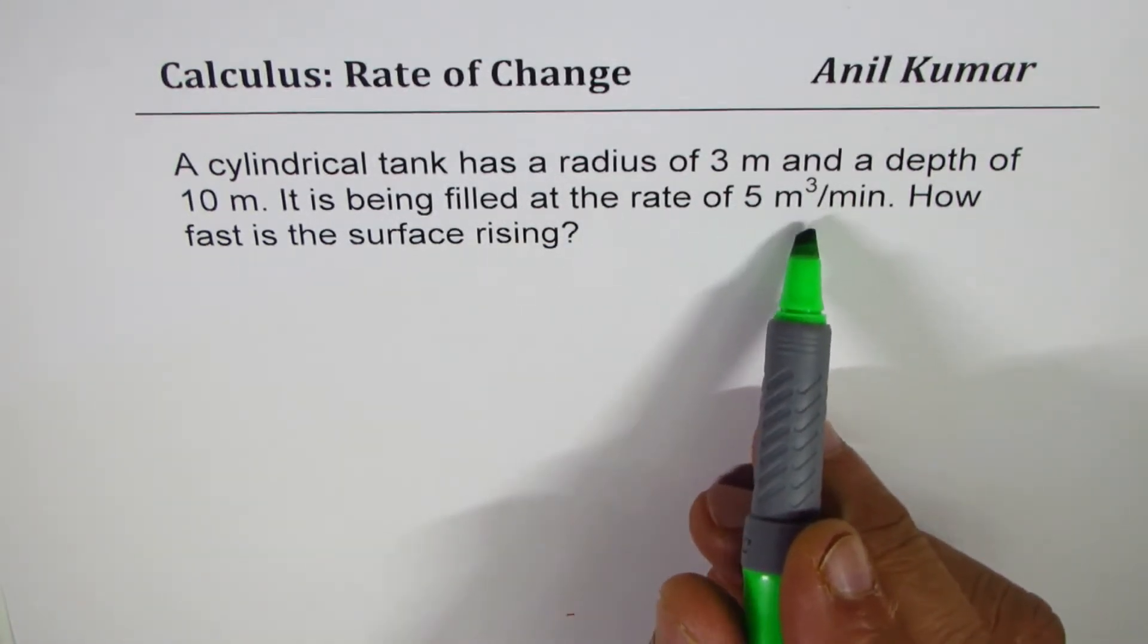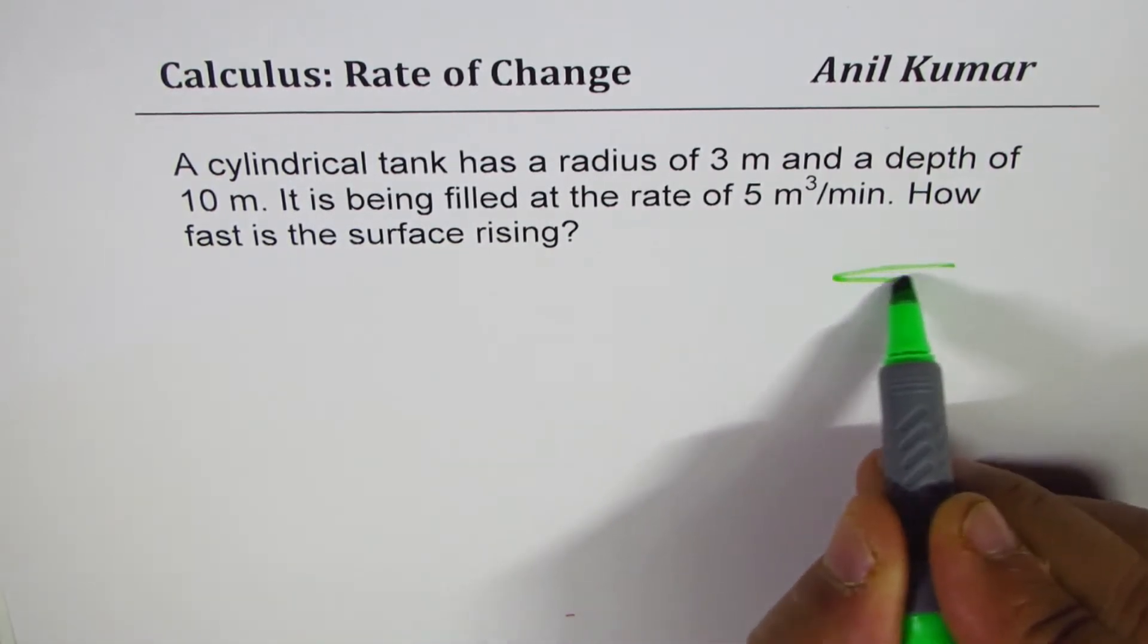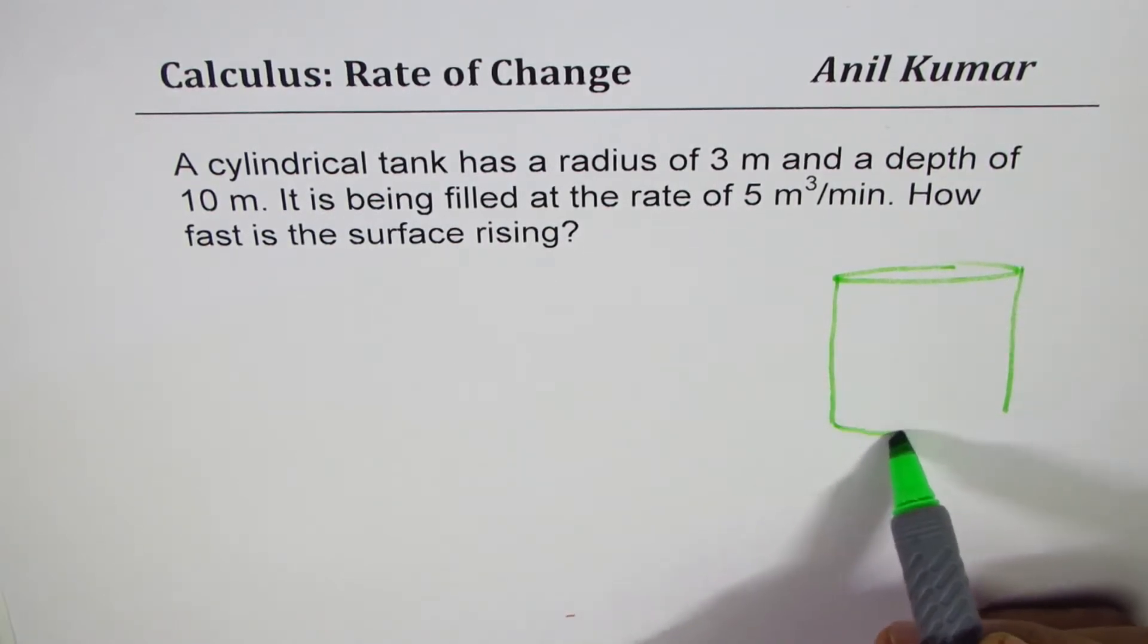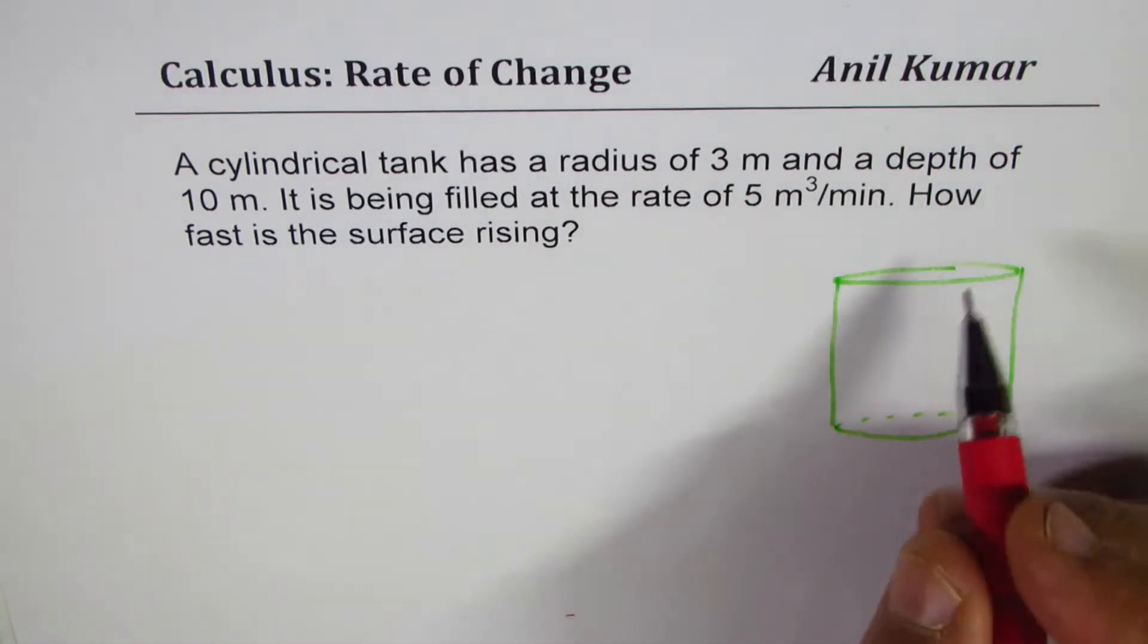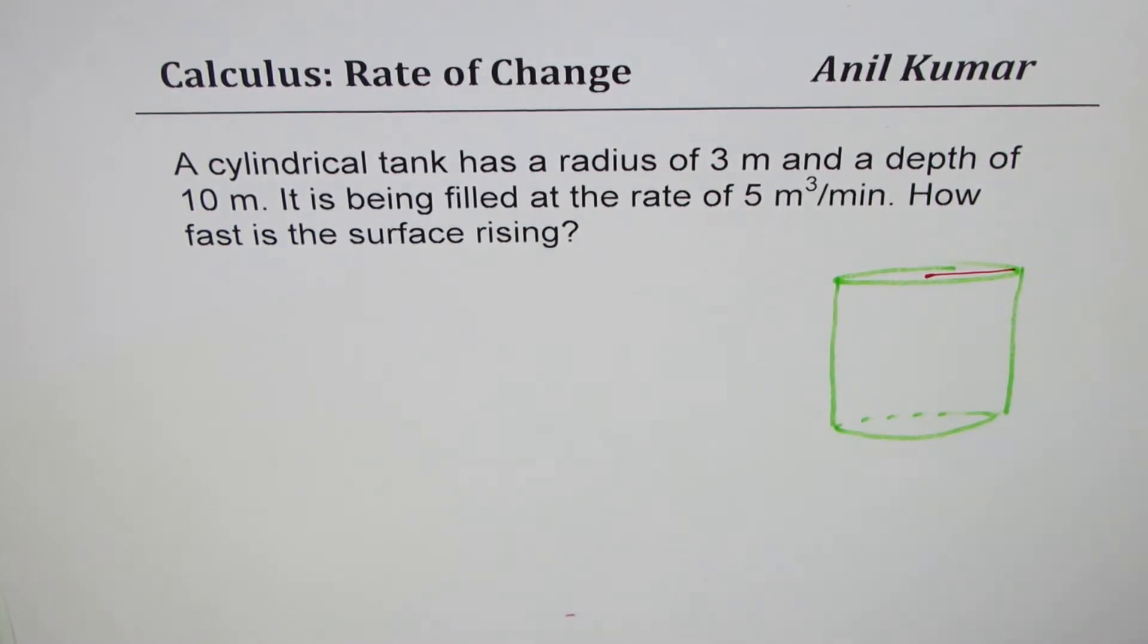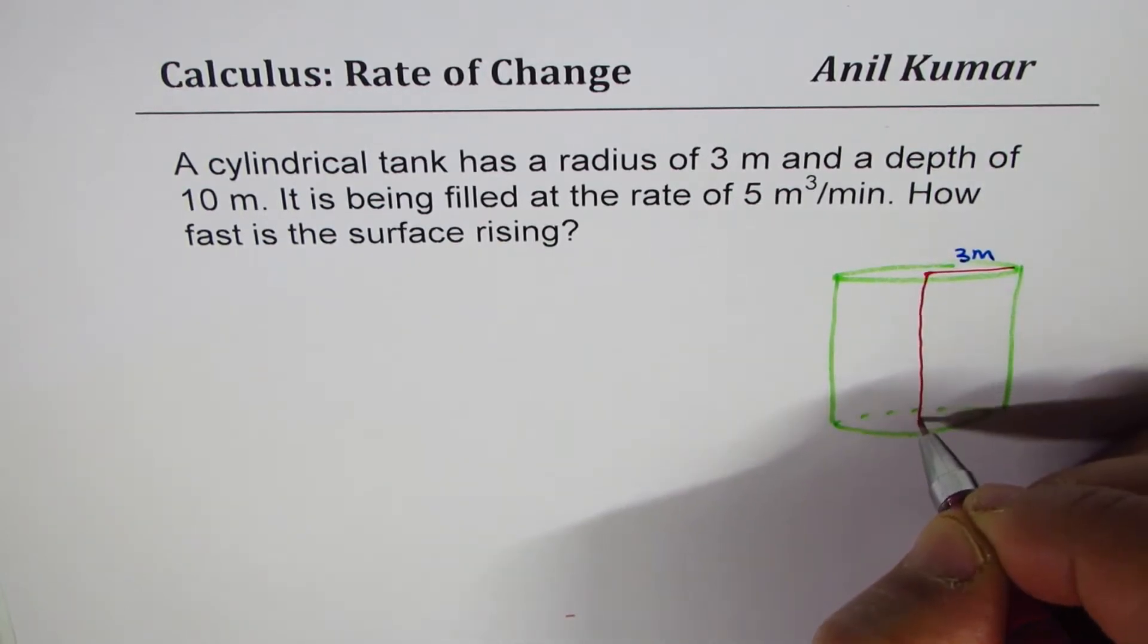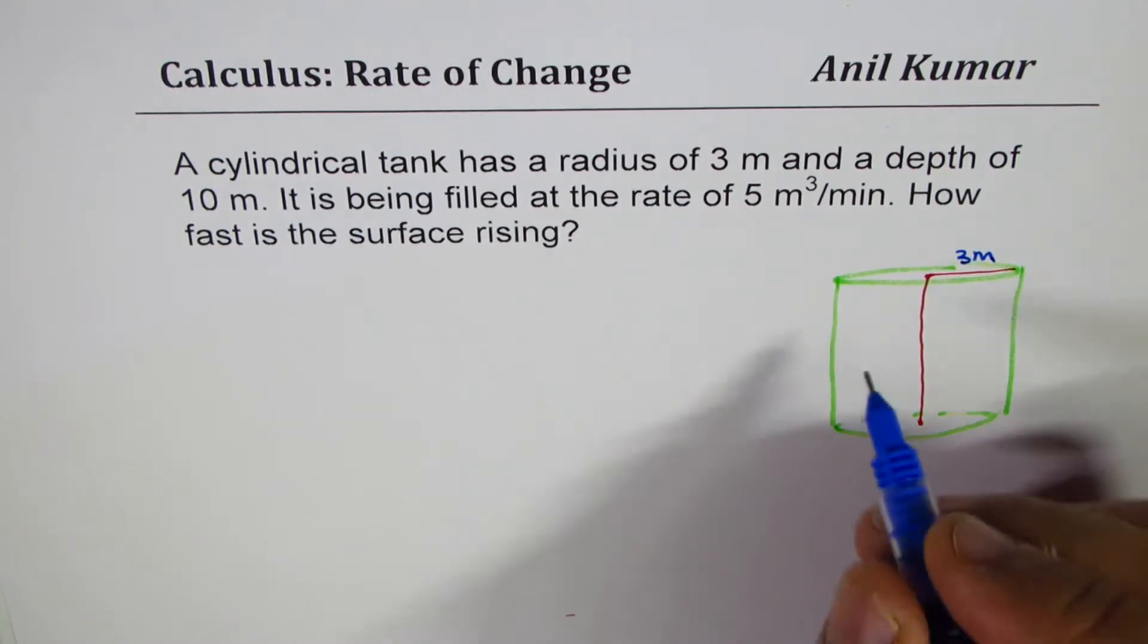How fast is the surface rising? Let's try to understand. Let's say this is the cylinder. Now it's given to us that it has a radius of 3 meters, so this is the radius and we'll write this as 3 meters. And it has a depth of 10 meters, and we'll say the depth is 10 meters.